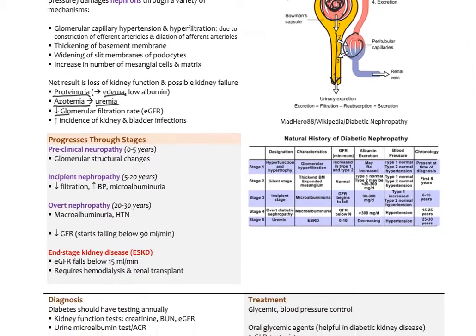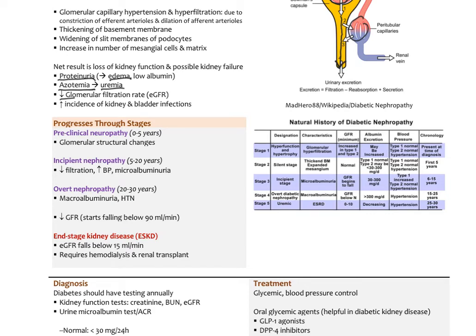Diabetic nephropathy typically progresses through several stages. Preclinical nephropathy occurs over the first few years with glomerular structural changes. Incipient nephropathy occurs between 5 and 20 years with decreased filtration, increased blood pressure, and microalbuminuria — we start to spill small amounts of albumin into the urine. Importantly, with microalbuminuria, you're not going to see the urine dipstick change — you have to do a special test to check for the lower levels of protein. After 20 to 30 years, we see macroalbuminuria, visible on the dipstick urinalysis, along with hypertension — that's overt nephropathy.